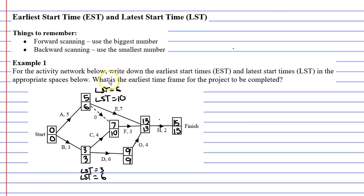We need to answer the next part of the question: what is the earliest time frame for the project to be completed? We can see that on our finish vertex this is 15. We don't actually know the unit — it could be days, minutes, seconds — so we write it as 15 units of time.